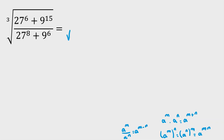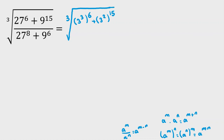Now let's calculate this. Cube root of 27 to the 6 — we say 27 is 3 cubed, so it's 3 cubed to the 6. 9 is 3 squared to the 15. Then we divide by 3 cubed to the 8, and 9 is 3 squared to the 6.